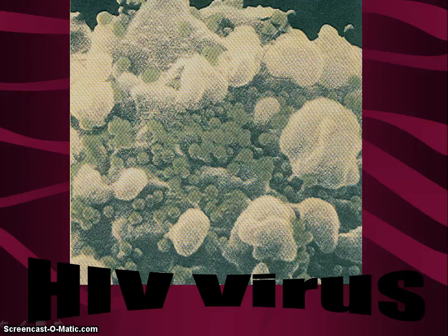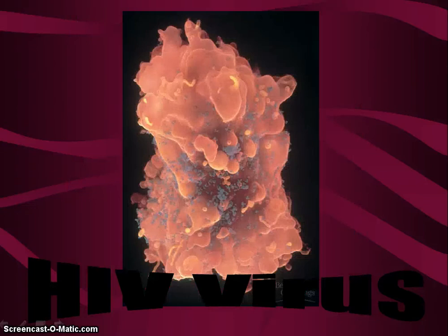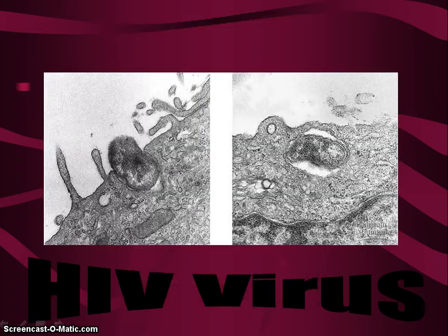In 1892, a Russian scientist passed the sap of an infected leaf through a filter designed to remove bacteria, and they still had the disease but again thought it was bacterial. In 1897, a Dutch microbiologist discovered that the infectious agent in the filtered sap could reproduce, could not be cultivated on nutrients, and was not inactivated by alcohol, which is generally lethal to bacteria — so they were very suspicious it was something else.